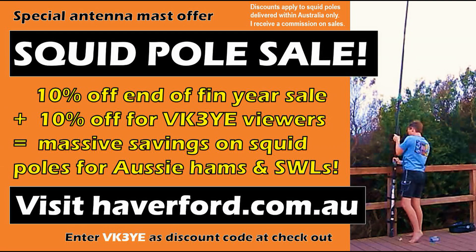If you want to operate portable QRP and get great results you need a good antenna as high as possible and that works on as many bands as possible. A good basis of that is a telescopic squid pole. Right now is a great time to get one or two or three because Haverford have their end of financial year sale - 10% off plus if you put in vk3ye as the discount code another 10% off. Available for customers within Australia. Just visit the Haverford website and search squid poles to browse the range.